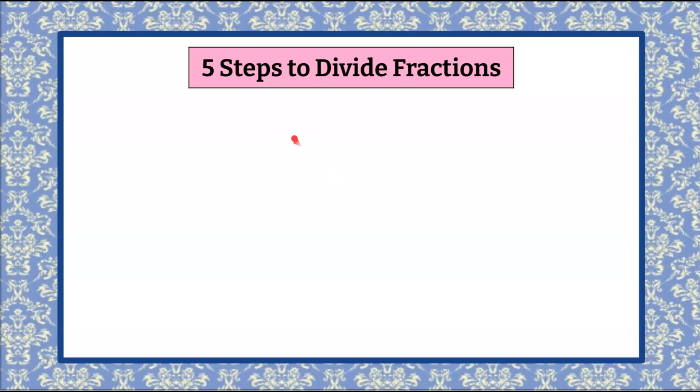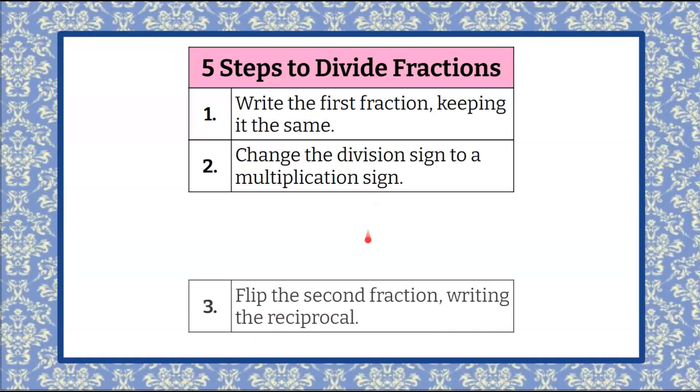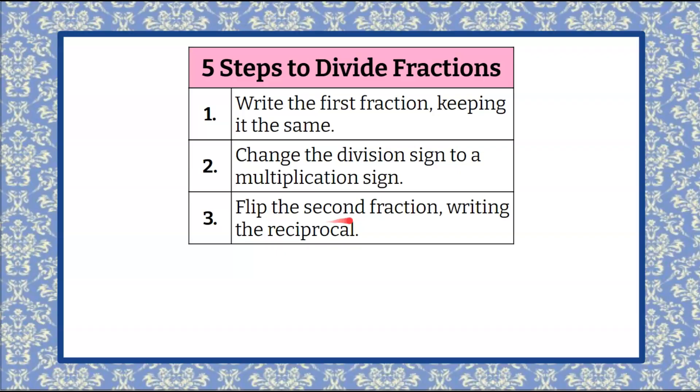Here we go. Step one, write the first fraction keeping it the same. Step two, change the division sign to a multiplication sign. Step three, flip the second fraction writing the reciprocal. So that action of flipping is writing the reciprocal.